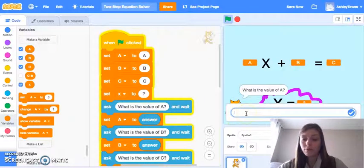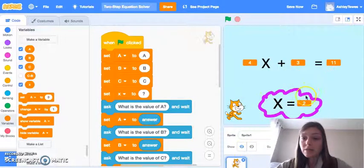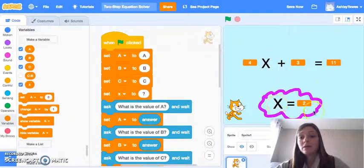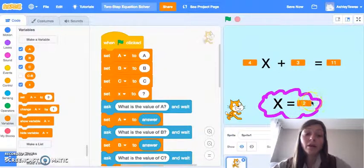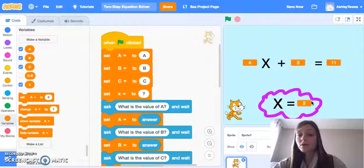So what is our value of A? 4. B is 3. C is 11. And we'll find here as this program solves, X does indeed equal 2. Now, to really test the effectiveness of the program, it's important to solve for a no solution, infinite solution, a solution when X equals zero, and a solution like we just did to be sure that your program works for all solutions.